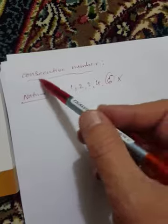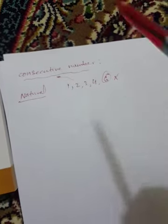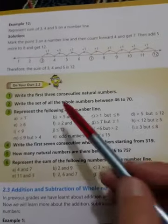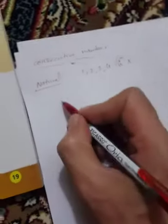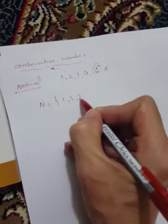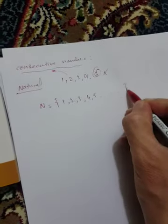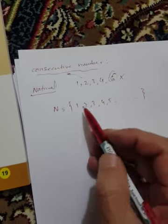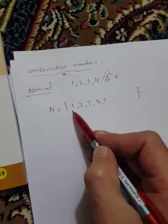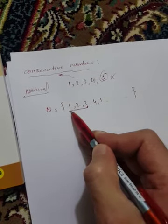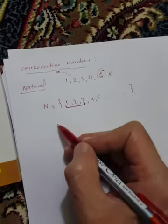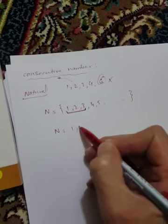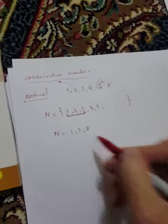Consecutive number — the first three consecutive natural numbers are: one, two, three. Three consecutive natural numbers: one, one, two, three. Three, three consecutive numbers.